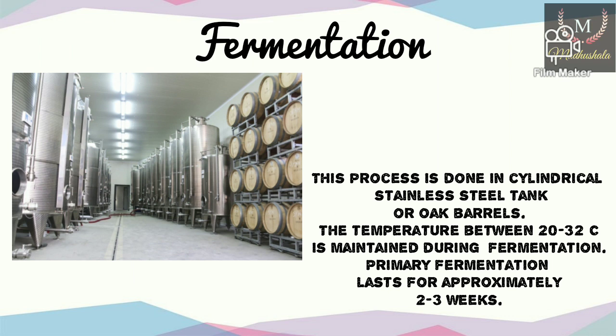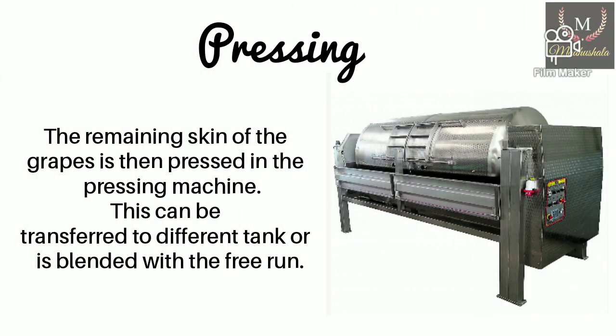Once alcohol is formed, yeast dies and settles at the bottom in the form of lees. The clear wine is racked into another tank, called free run, and the remaining skin is taken for pressing. Pressing can be done using various types of pressing machines such as basket press, balloon press, or pneumatic press. The skin is pressed to remove the remaining wine without crushing the seeds, as seeds contain harsh tannins and oils. This wine is called press wine. The pressure in a pneumatic press can reach up to four to six bars over two hours. The wine is then transferred to another tank or blended with the free run.